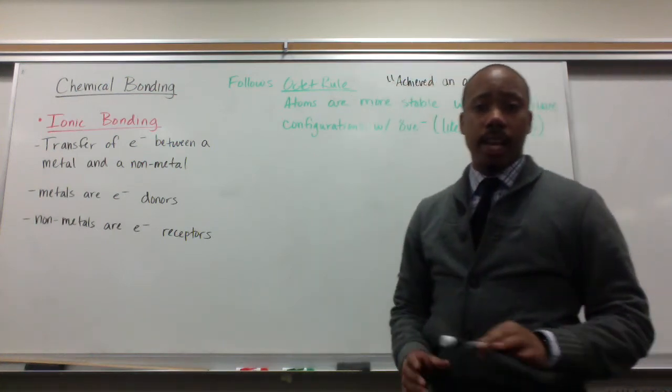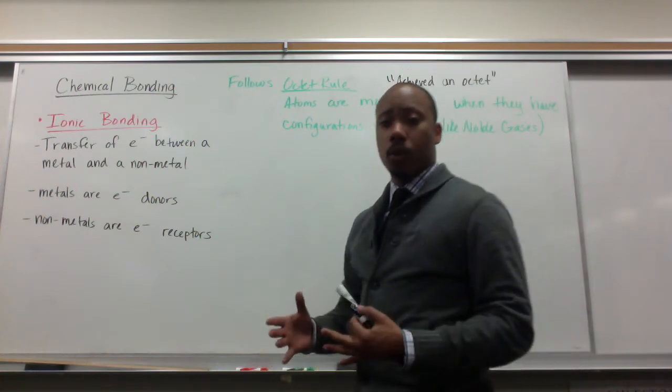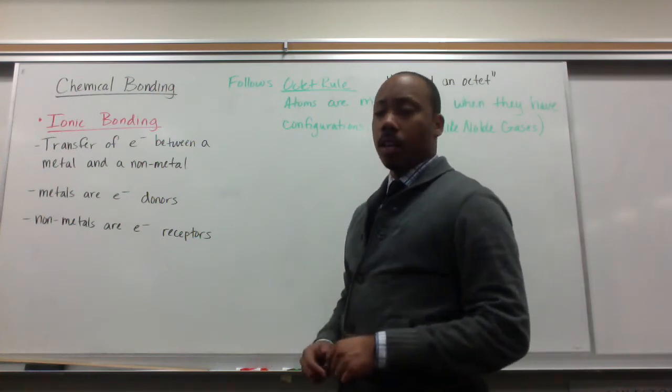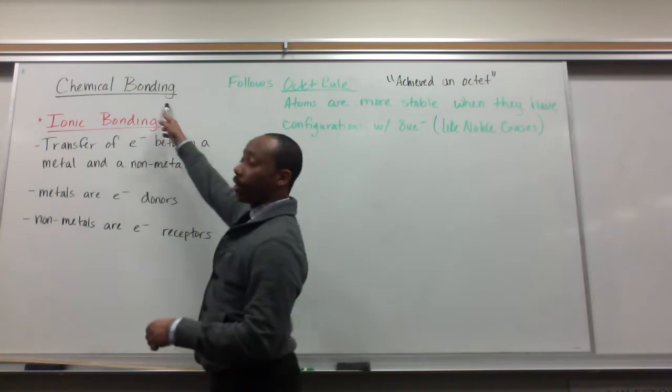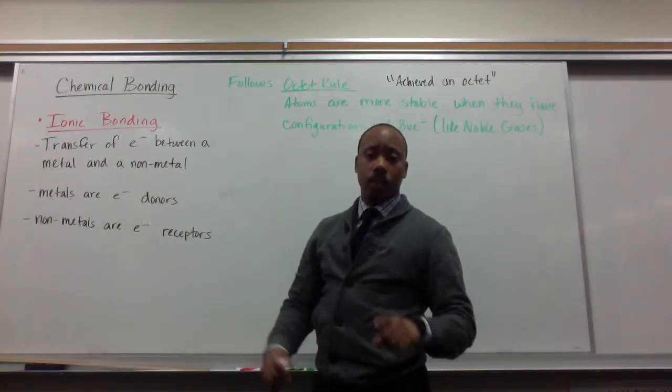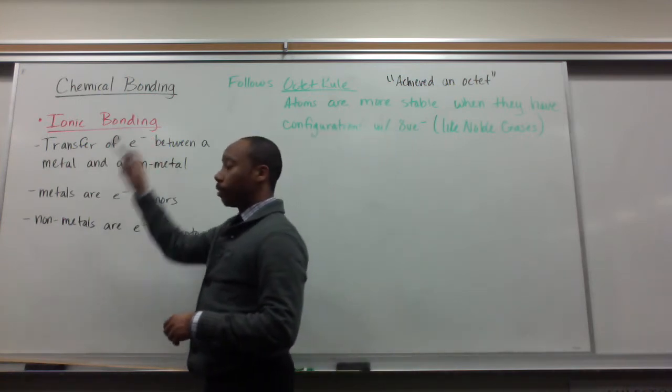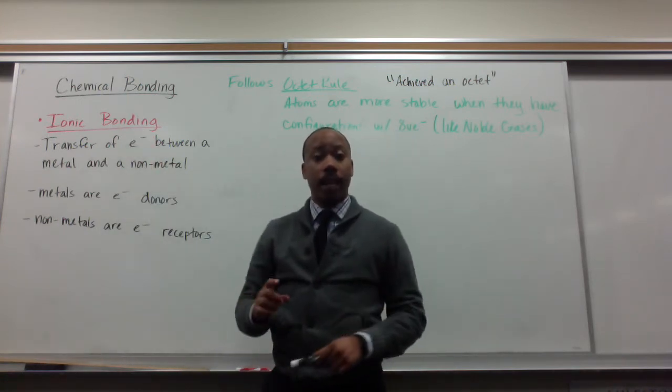Welcome to section 8, which is entitled the octet rule and chemical bonds or bonding. We're going to be talking about chemical bonding. There are two types of bonding that we'll study in this class: the first type is ionic bonding, which we introduce today. The second type will be covalent bonding in our next video.